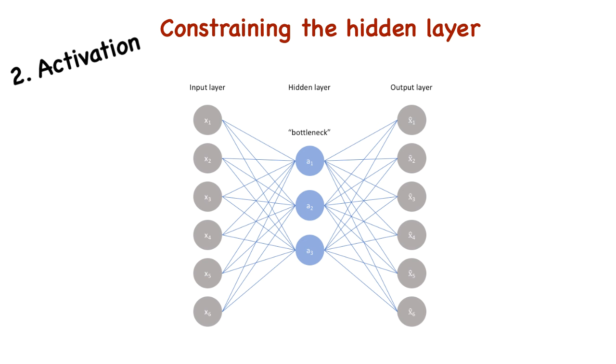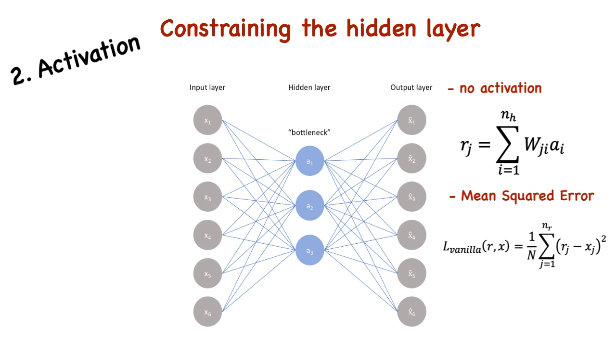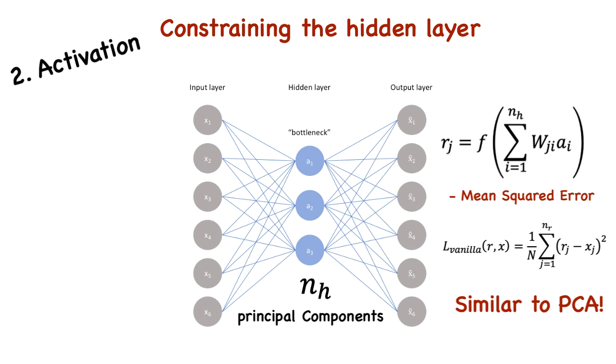The second property is activation. If we don't use an activation function for the decoder phase, and the loss function is the mean squared error, then the results are similar to PCA, principal component analysis. And so the latent representation of k neurons will represent the top k principal components. Adding a nonlinear activation in the encoder and decoder parts allow us to perform a nonlinear version of PCA.